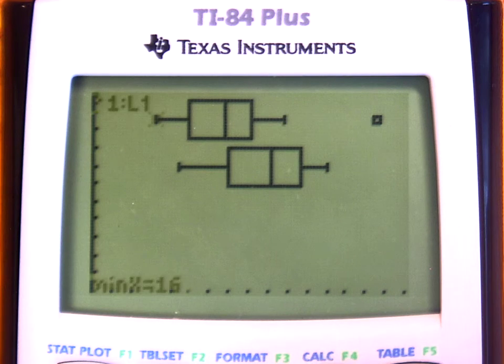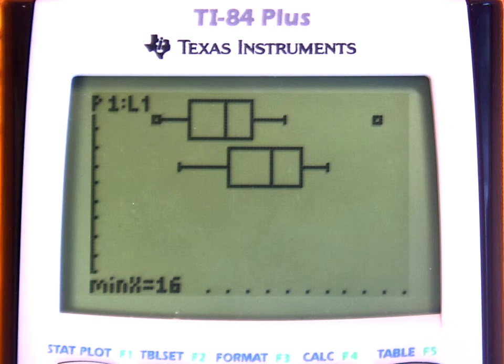Now, if you press the trace button, notice your cursor is plotting or tracing along the first plot. So at the bottom of the screen, then, you can see the minimum is 16, just like we calculated in class.